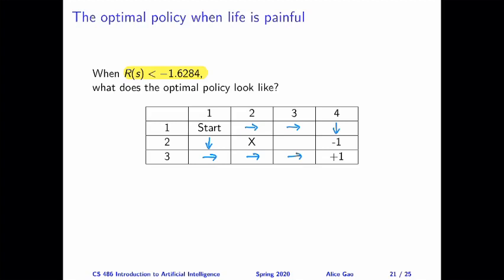Now, what would the agent do in S11? How would it choose between these two paths? So remember for the previous case, the agent would choose the bottom path because it still wants to get to the plus one state. But in this case, it doesn't matter which goal state the agent gets to.